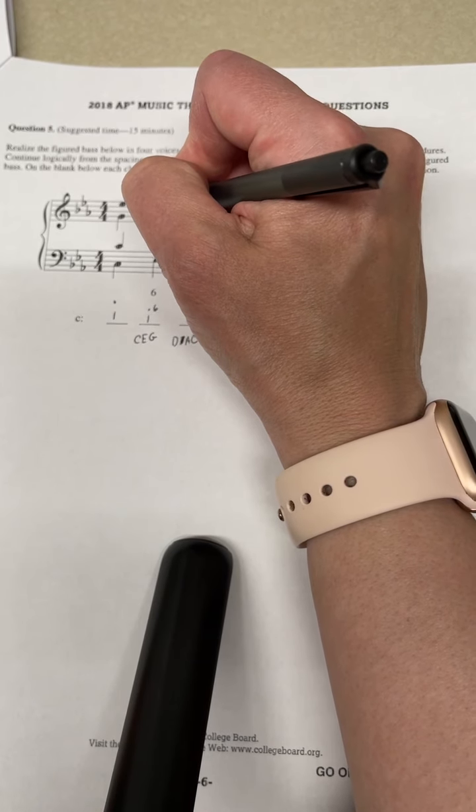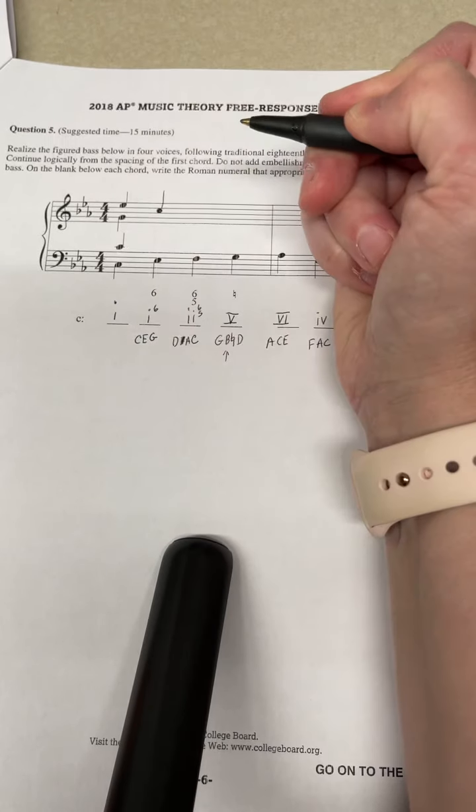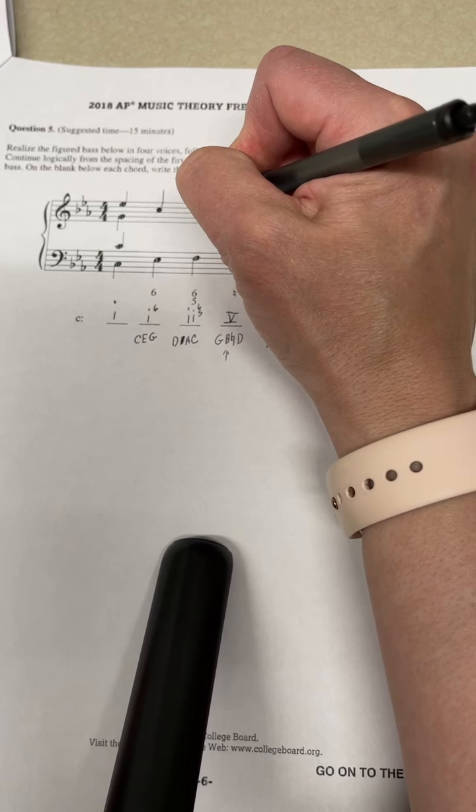So it's nice to do like a little voice exchange here between the soprano and the alto and the bass. So I'm going to put a C right here in my soprano, and then that means because I see the C right here that I can hold the C here.